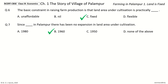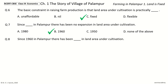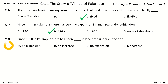Question 8: Since 1960 in Palampur, there has been Dash in Land Area under Cultivation. The options are An expansion, an increase, no expansion, a decrease. Your time to choose. And the answer is No expansion. So, since 1960 in Palampur, there has been no expansion in Land Area under Cultivation.